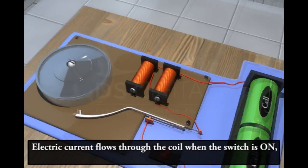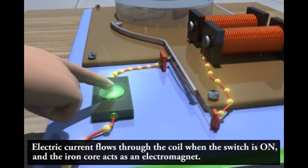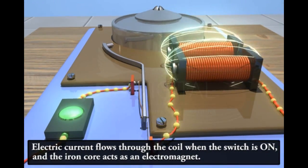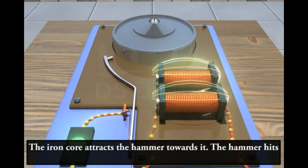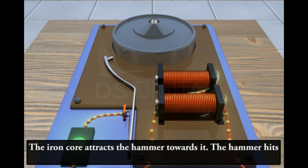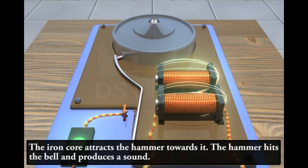Electric current flows through the coil when the switch is on and the iron core acts as an electromagnet. The iron core attracts the hammer towards it. The hammer hits the bell and produces a sound.